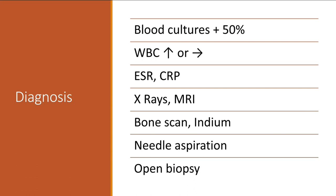For diagnosis, blood cultures are helpful if positive, but negative blood cultures don't rule out vertebral osteomyelitis. The white count may not be abnormal. Usually the ESR and CRP may be elevated. You can do x-rays and bone scans, though most clinicians go directly to MRI if vertebral osteomyelitis is suspected in an adult.